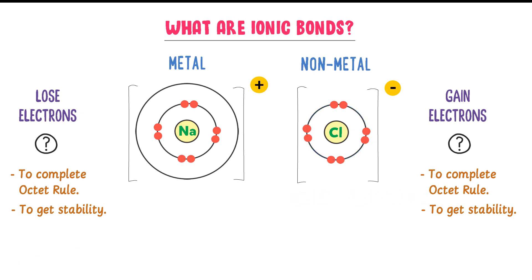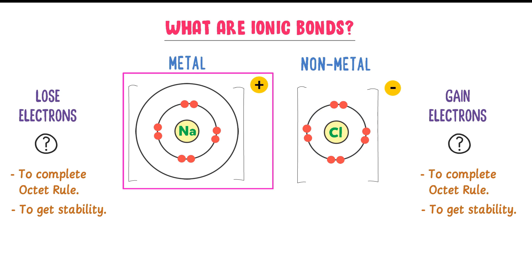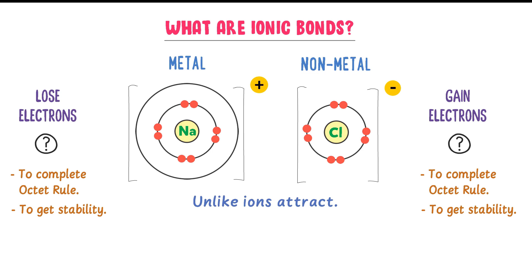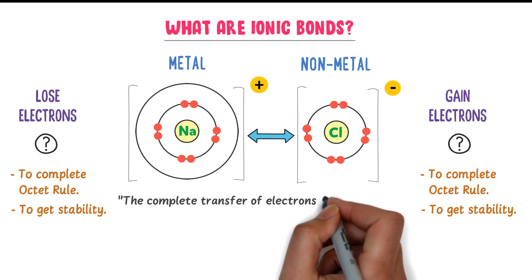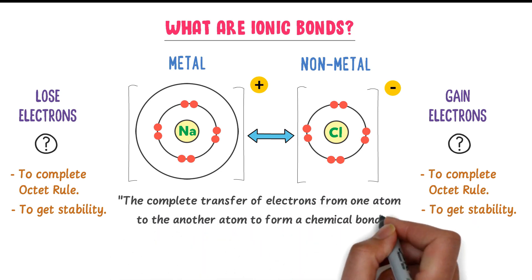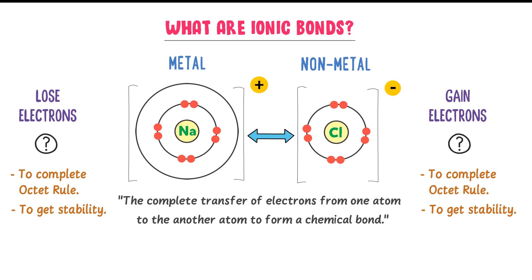Now listen carefully. This is a positively charged ion and this is a negatively charged ion. We know that unlike charges attract each other, so these two ions will fuse together to form a chemical bond. This chemical bond between chlorine and sodium ions is called an ionic bond. We define ionic bonds as the complete transfer of electrons from one atom to another atom to form a chemical bond.